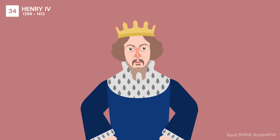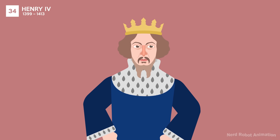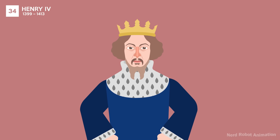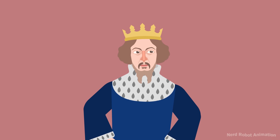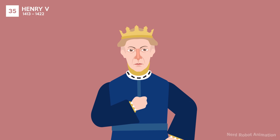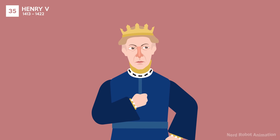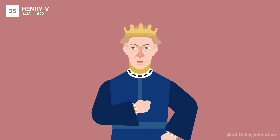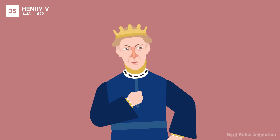Henry IV seized the throne from Richard II, leading to ongoing conflict and rebellion. His reign was marked by efforts to stabilize the kingdom. Henry V is famous for his military success at the Battle of Agincourt, as part of the Hundred Years' War. His sudden death left an infant heir, leading to instability.